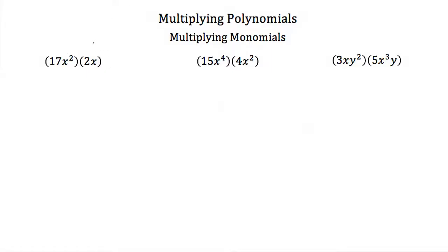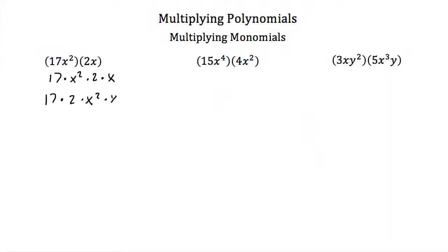Let's look at our first example. Here we have two monomials multiplied together: 17x squared and 2x multiplied together. Since these are all multiplied together, we can think of this as 17 times x squared times 2 times x. And if we write it that way, then I can rearrange this as 17 times 2 times x squared times x.